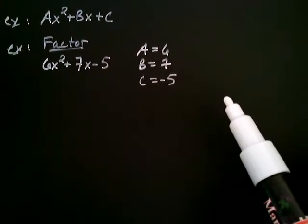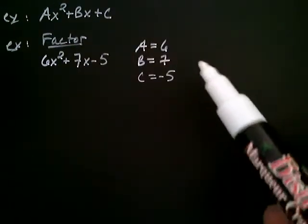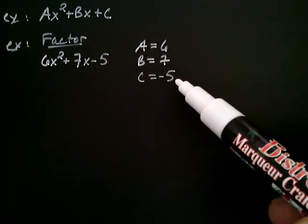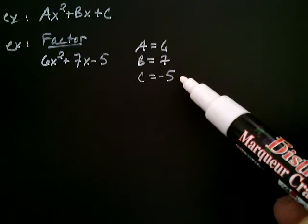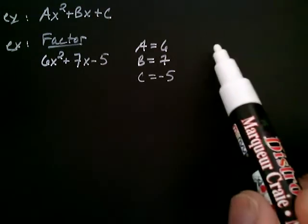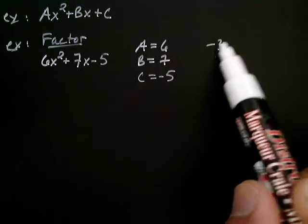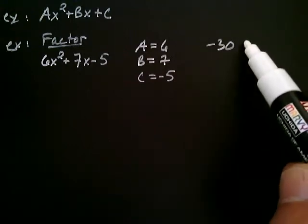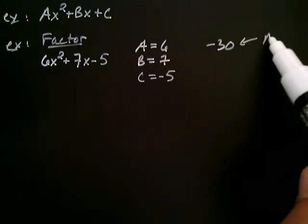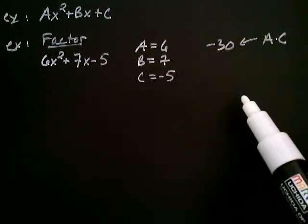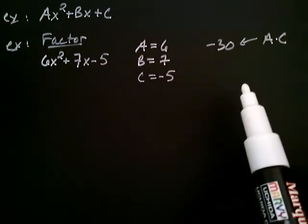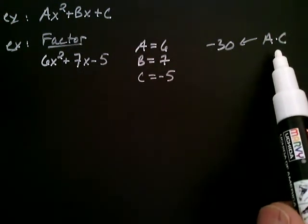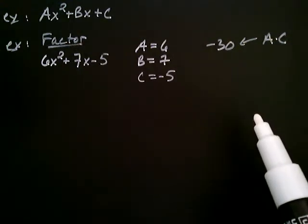So the first step of the AC method is to multiply the A and the C together. In this case, I'm going to get the number negative 30. And I'm going to write that right here off to the side. So that number that you get, that is A multiplied by C, and that's why we call this the AC method. To remind us that multiplying A and C together, that's the first thing we do. That's our first step.